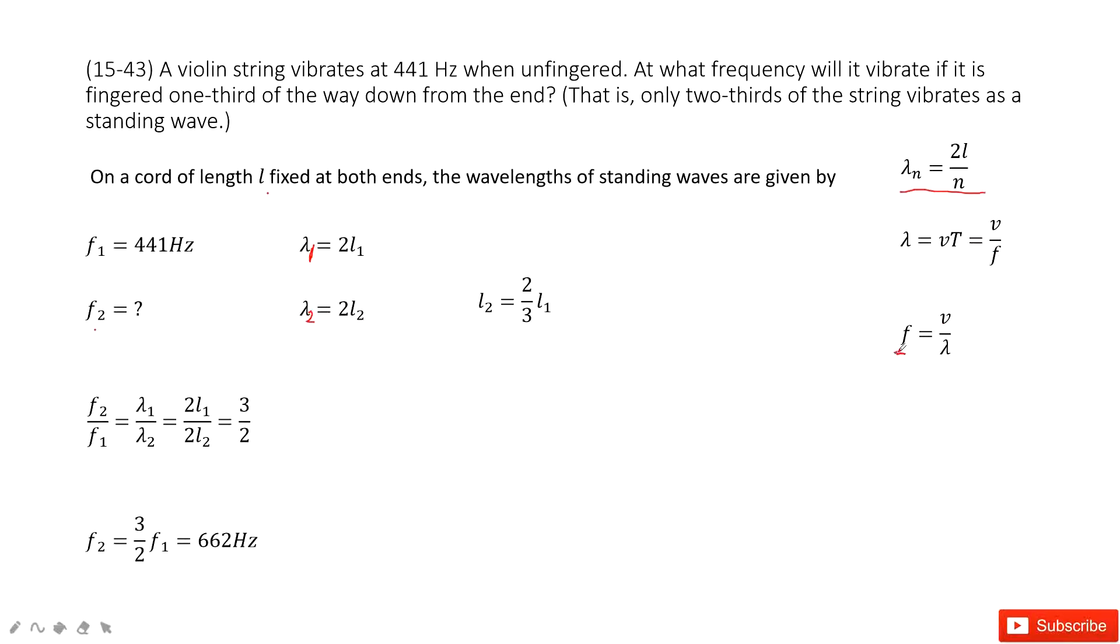So the frequency f can be written as velocity v, or speed of the wave divided by lambda. And we know for the same string, the V can be constant. So in this one, we can find the ratio for it.